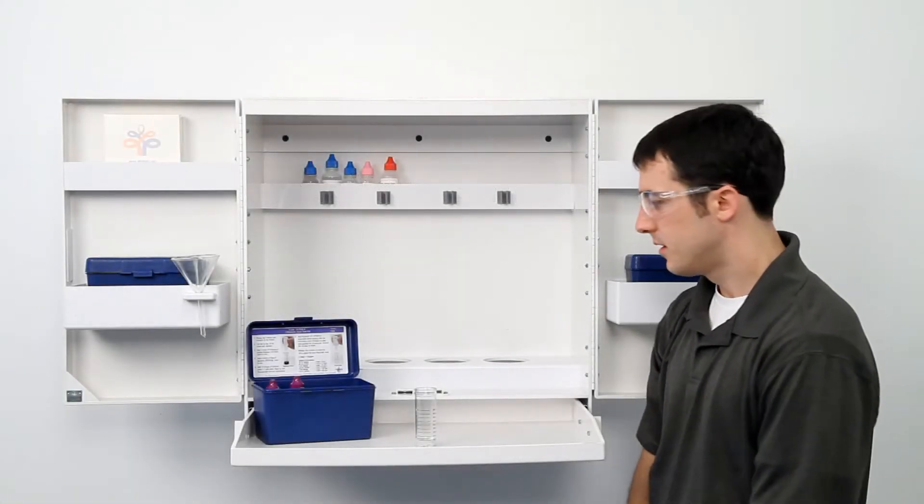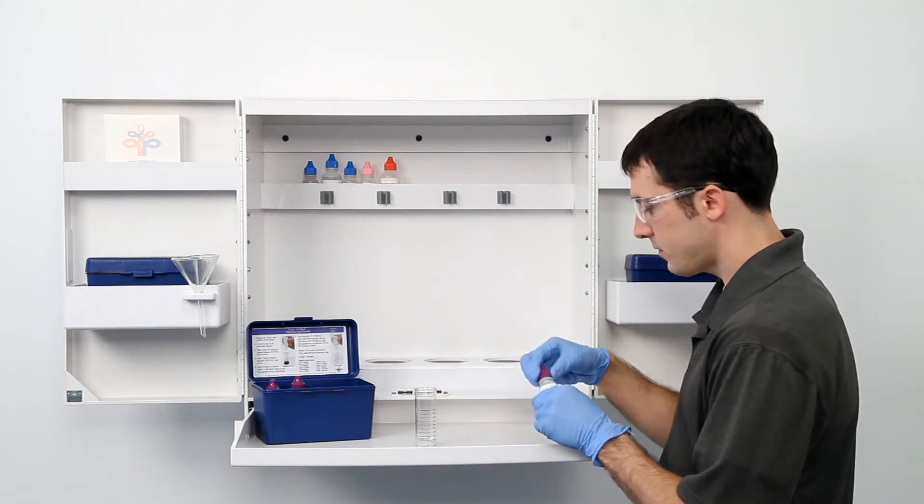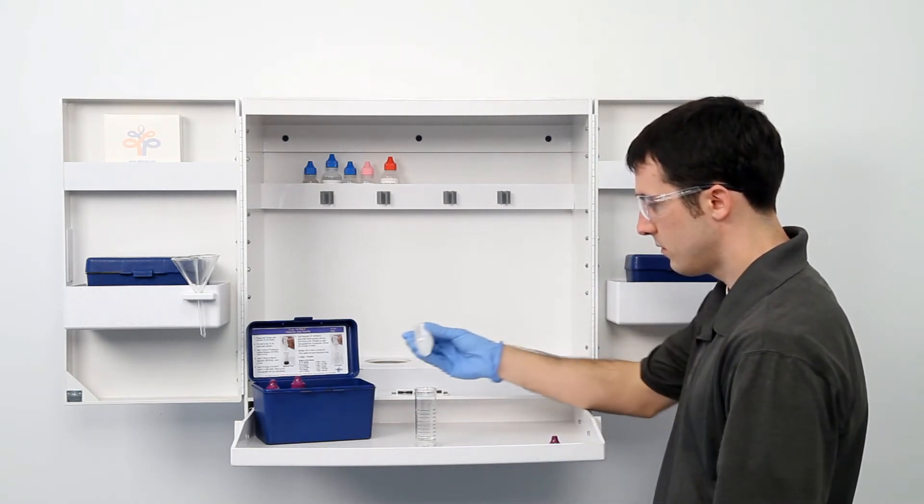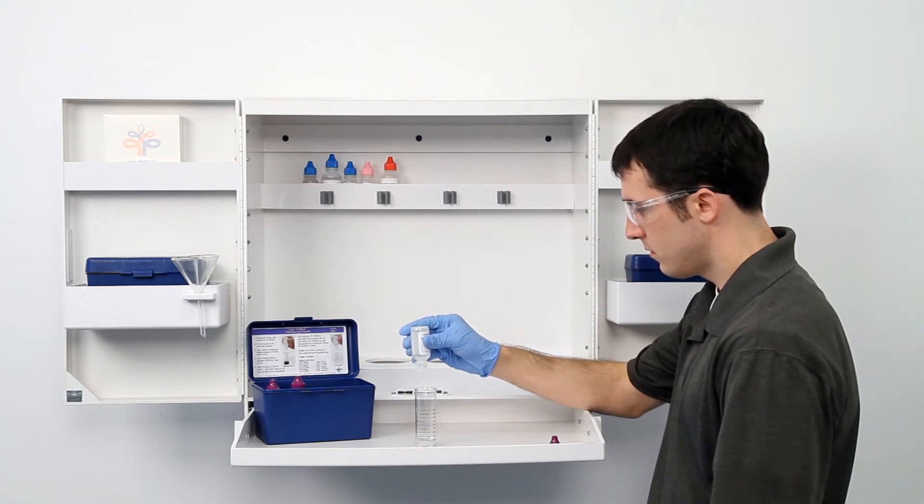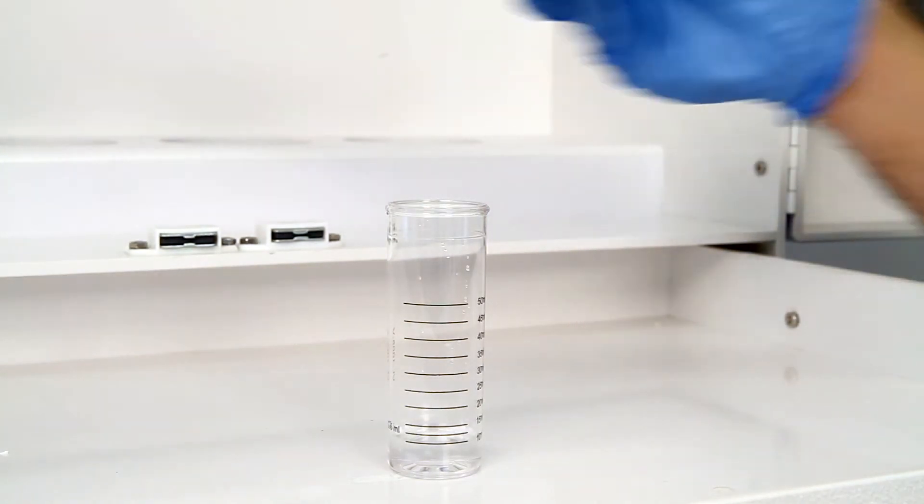The next step according to the endpoint ID procedure is to add ten drops of sulfuric acid. The bottle contains a dropper tip, so it's important to hold the bottle vertically to get a consistent drop size. After the addition of each reagent, it's important to swirl the vial to make sure the reagents are properly mixed.